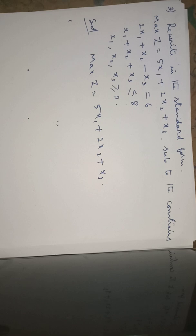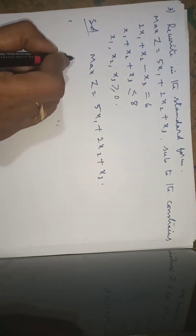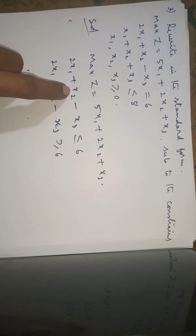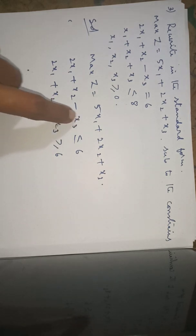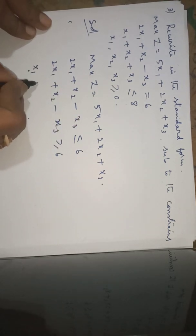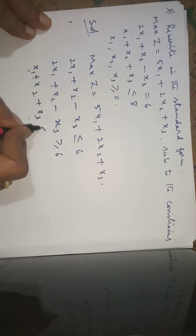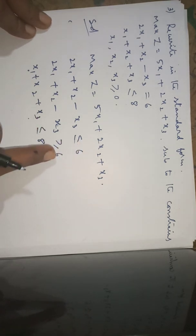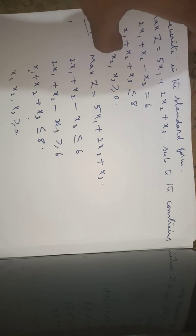The first constraint has an equality symbol. Whenever a constraint has an equal to symbol, we must rewrite it as two separate constraints: 2x1 plus x2 minus x3 less than or equal to 6, and 2x1 plus x2 minus x3 greater than or equal to 6. The second constraint we write as it is: x1 plus x2 plus x3 less than or equal to 8. Then all of x1, x2, x3 are greater than or equal to 0.